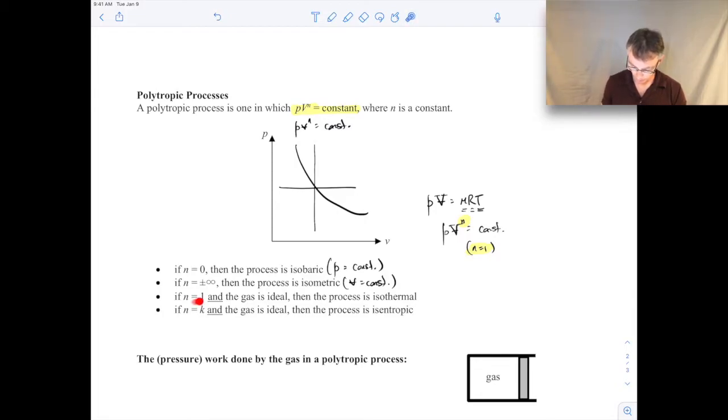If N is equal to one and the gas is ideal, then the process is isothermal. So that's this one I showed here where the temperature is a constant. And something that we'll talk about a little bit later in the course is if N is equal to the specific heat ratio. So K here is the specific heat ratio, equal to CP over CV. If N is equal to the specific heat ratio and the gas is ideal, that corresponds to an isentropic process. We haven't covered what isentropic means yet, but it means when the entropy remains constant in the process. So that'll be an important one we'll cover later in the course.